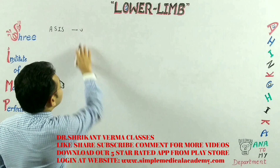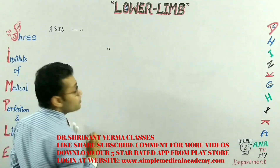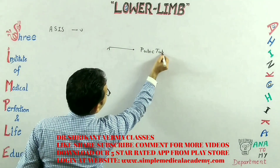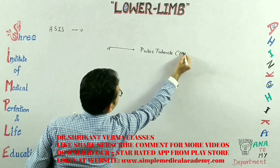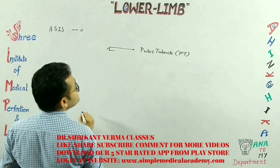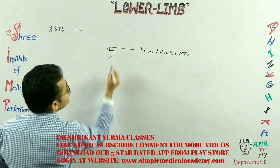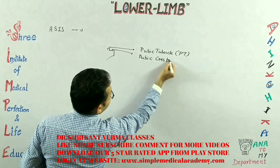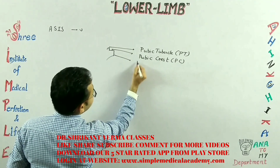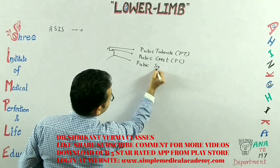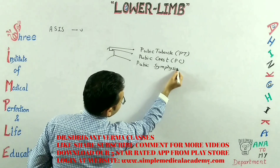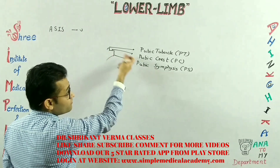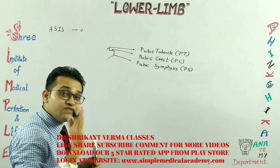What are the other landmarks? Here is another bony projection known as the pubic tubercle, indicated as PT. It continues as the pubic crest, indicated as PC. Then it continues as the pubic symphysis, indicated as PS. This pubic symphysis meets with the opposite side hip bone to form the symphysis joint.